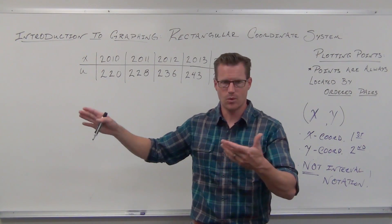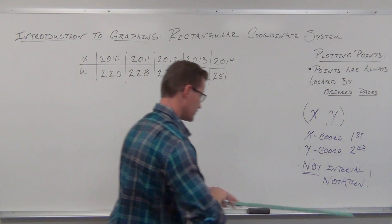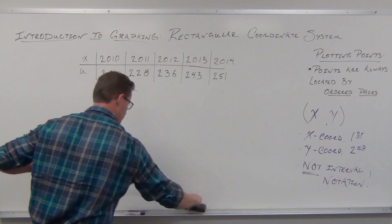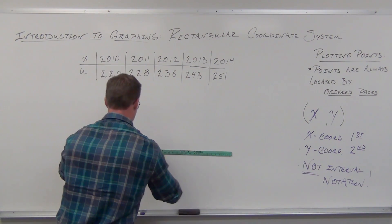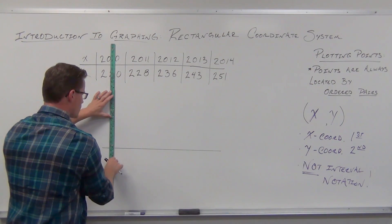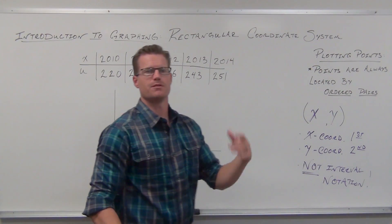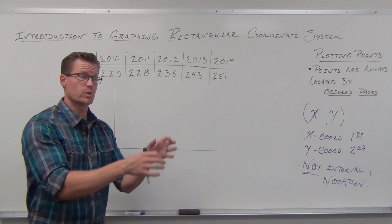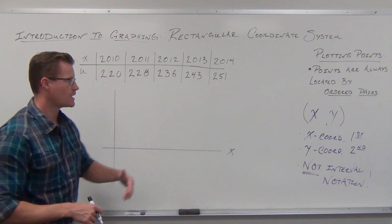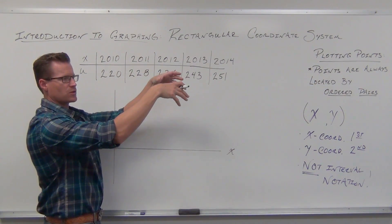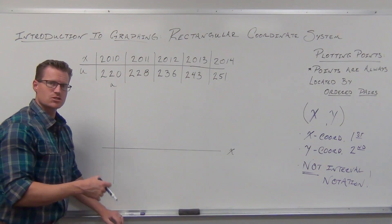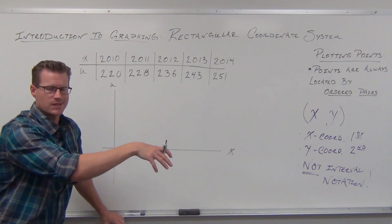X kind of gives it away because X is our horizontal. That was number one — how to pick the horizontal and how to pick the vertical. The horizontal axis should be your independent variable; it should be what the other numbers are based on. Right now, the number of internet users was based on the year, so our year — indicated by X — is going to be our horizontal axis. The dependent variable, users, depends on what year we were considering, so U is going to be our vertical axis.